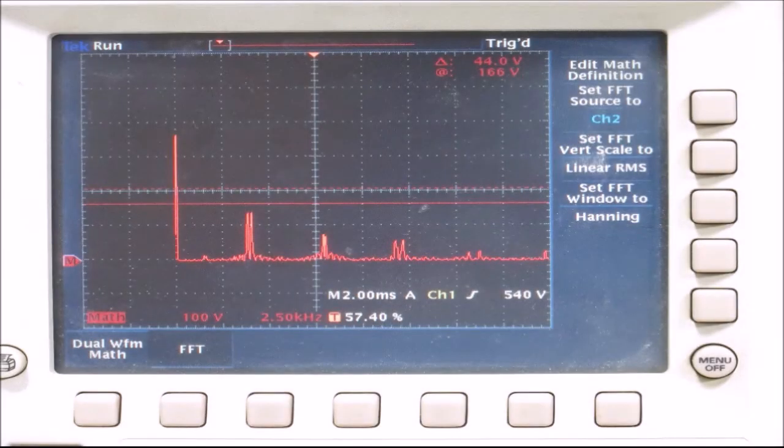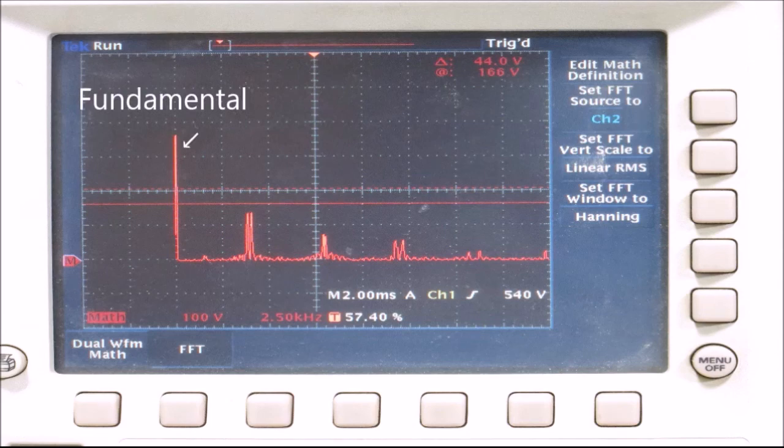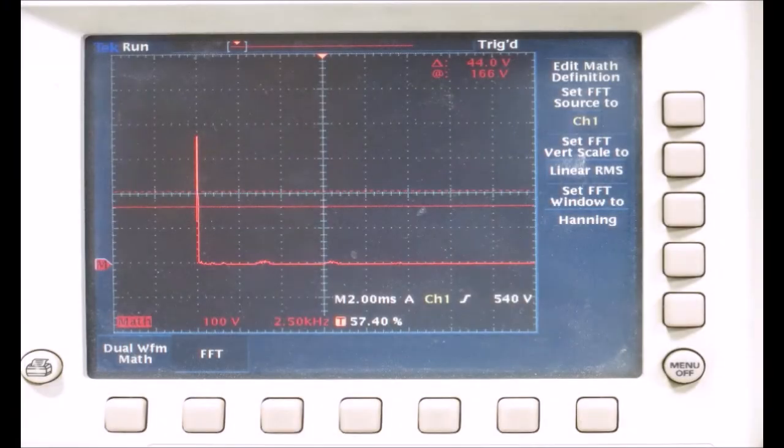If we now look at the Fourier transform and linear RMS voltage you can see the harmonic content at the fundamental and carrier frequencies but the waveform after the filter shows the harmonic content has been eliminated which will help your motor run more effectively.